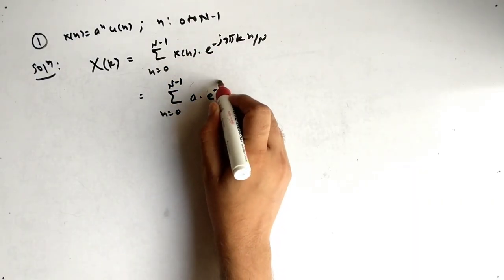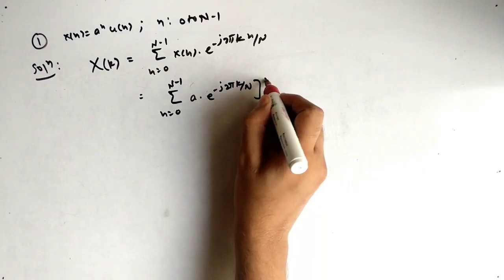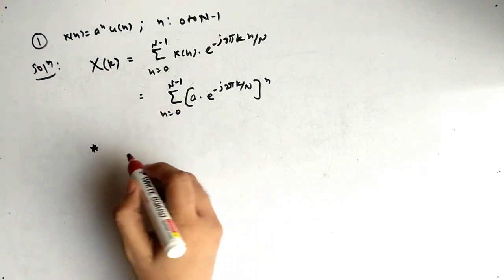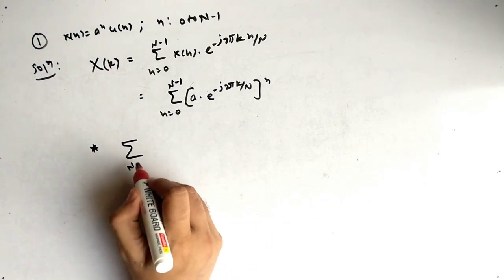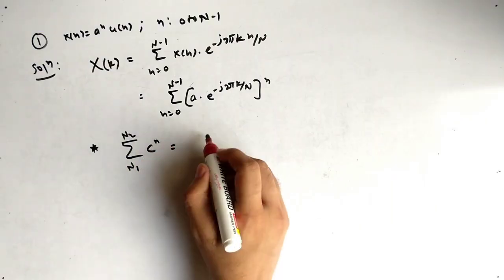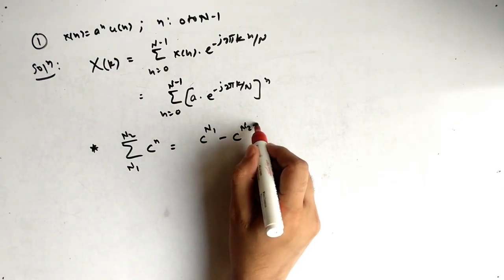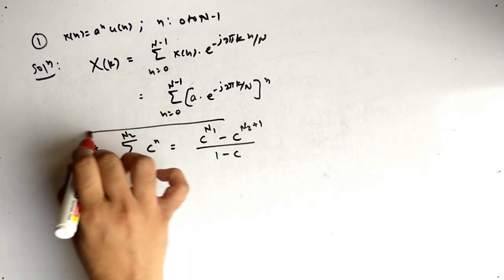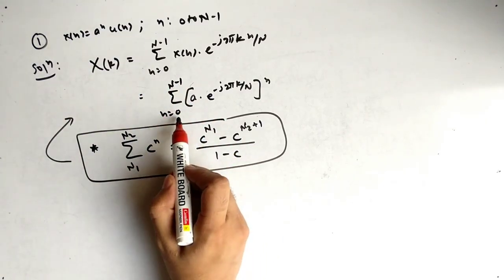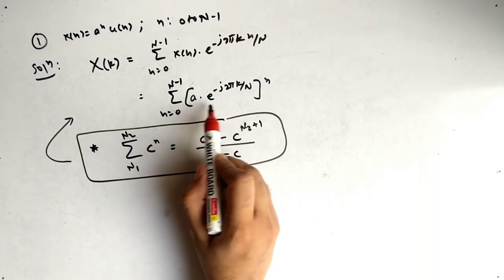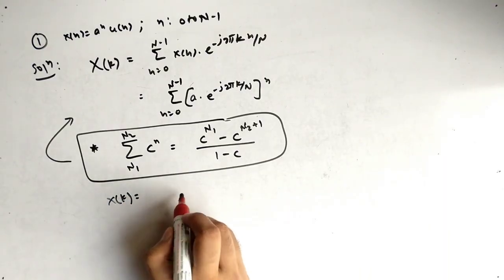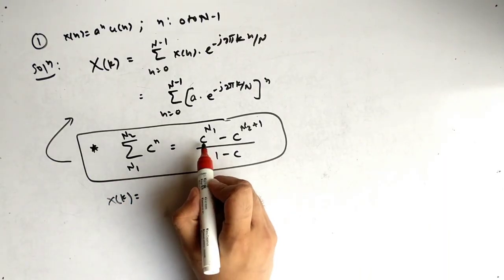Substituting x[n] = a^n into the DFT formula, we take (a times e raised to minus j 2 pi k by N) raised to n as the common base. We use the geometric series formula: the summation of c raised to n from n1 to n2 equals c raised to n1 minus c raised to n2 plus 1, all divided by 1 minus c. Here n1 = 0 and n2 = N minus 1.